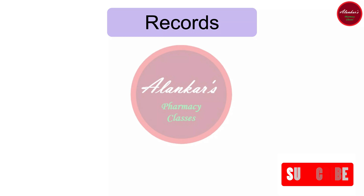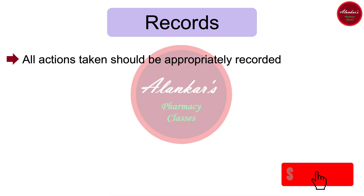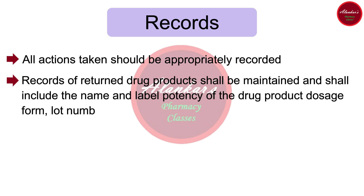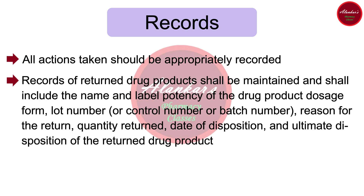The last topic is the records of returned goods. All actions taken should be appropriately recorded. As per FDA, the records of returned drug products shall be maintained and shall include: the name and label potency of the drug product, dosage form, lot number or control number or batch number, reasons for the return, quantity returned, date of disposition, and ultimate disposition of the returned drug products.